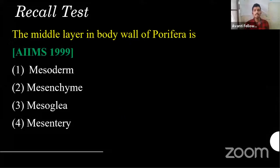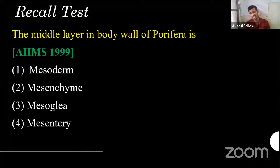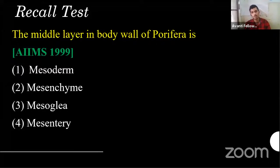Second question: the middle layer in the body wall of Porifera — asked in AIIMS 1999. Options: mesoderm, mesenchyme, mesoglia, mesentery. It's a little confusing but one of the easy questions. Remember: whenever they ask about any phylum, first imagine the phylum.